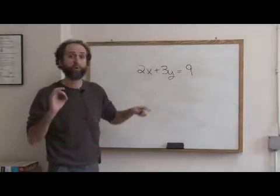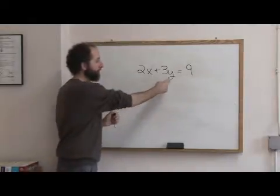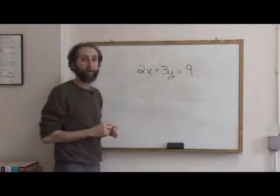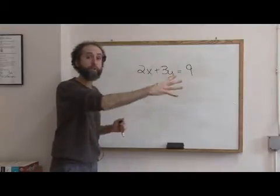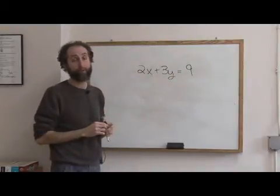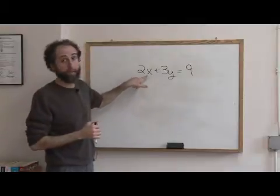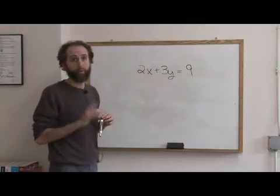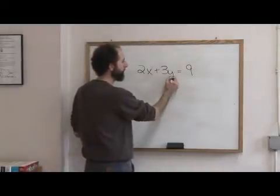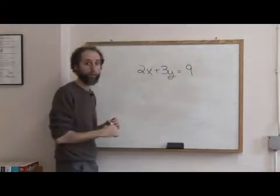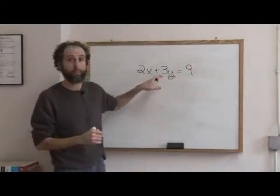If we want to solve this, ordinarily if your teacher asks you to solve it, what they mean is solve for y. The reason is because when we get it into the form y equals something, it makes it very easy to graph. You might be asked at some point to solve for x — you could do that also. So when we want to solve for y, we want to get y alone. Solve for y means get y alone.